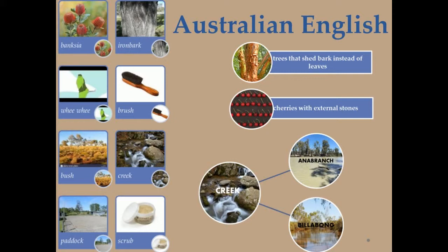The giant kingfisher with its raucous bray was long referred to as a laughing jackass, later as a bushman's clock, but now it is a kookaburra. Cattle so intractable that only roping could control them were said to be ribbable, a term now used as a synonym for angry or extremely annoyed. Some Australian English terms came from aboriginal speech.